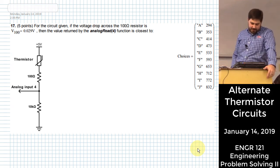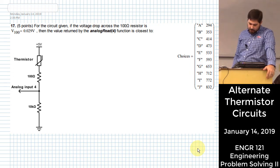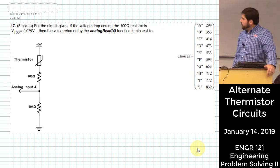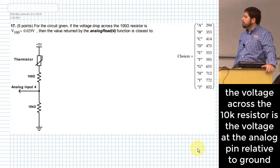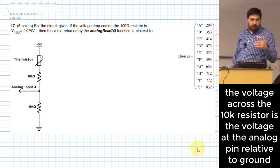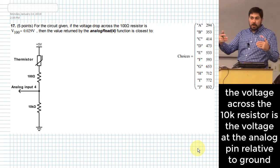For this circuit that's given here, if the voltage drop across the 100 ohm resistor is 0.029 volts, then the value returned by the analog read function will be closest to such and such. Let me divide this into maybe a couple of different parts. So the first part is a circuits problem, and then the next part is more of an Arduino problem.